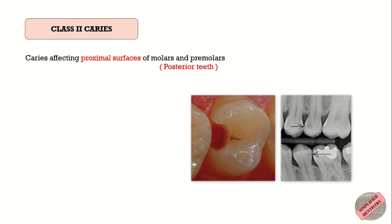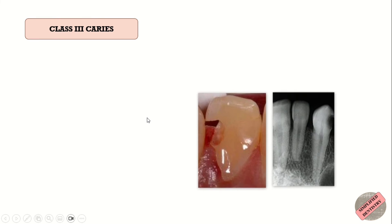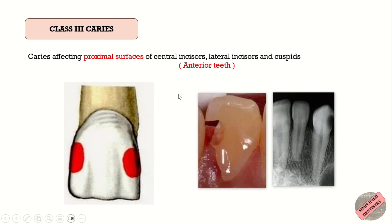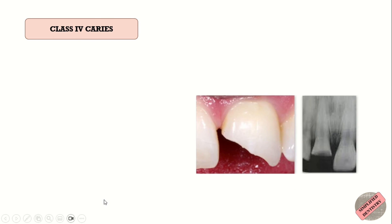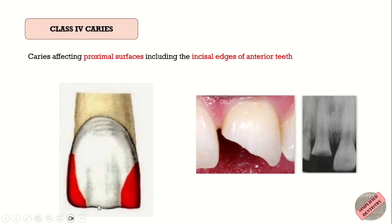Class 2 caries is the caries affecting the proximal surface of posterior teeth — that is, either the mesial surface, distal surface, or both. Class 3 caries is the caries affecting the proximal surface of anterior teeth, that is incisors and canines, and it does not involve the incisor angles. Class 4 caries is the caries affecting the proximal surface of anterior teeth involving the incisor angle — that is, the incisal edges of the anterior teeth.